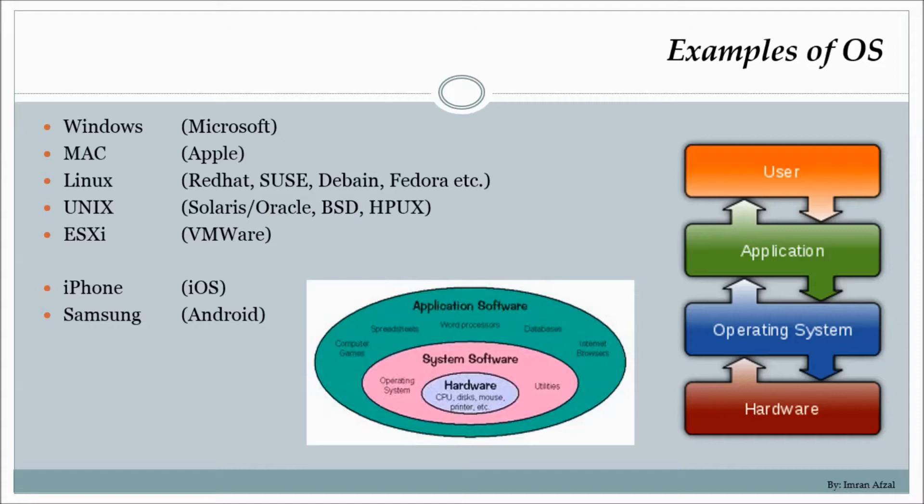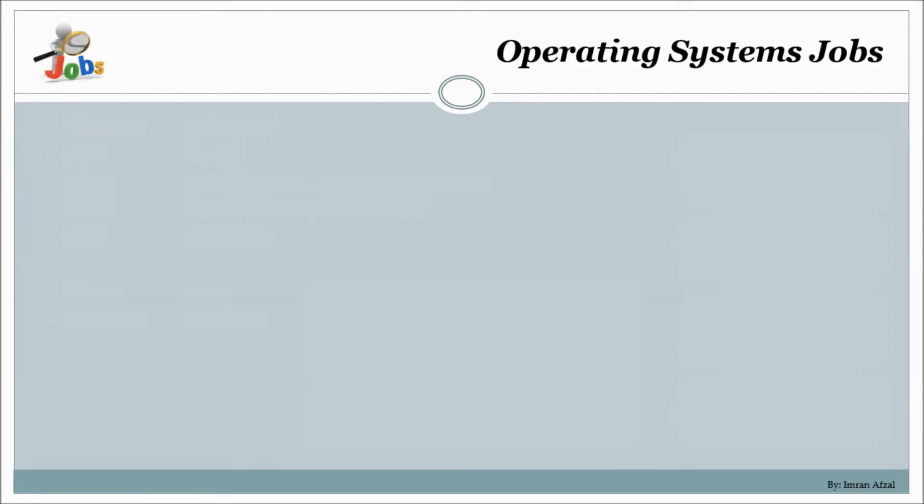You type into the Word document or Excel document or any notepad or any other document depending on the operating system. You type it in, and that application software captures those strokes from your keyboard. Once you're done, it sends that to the operating system. The operating system - either you tell it to save it or print it - and then the operating system tells the hardware what to do. That's the simple example of operating system.